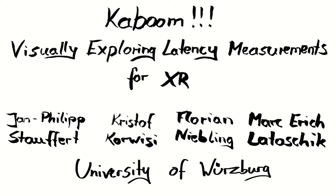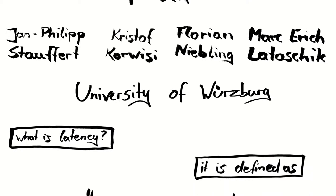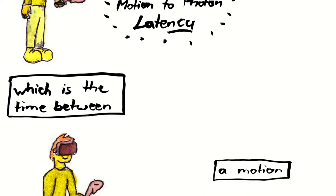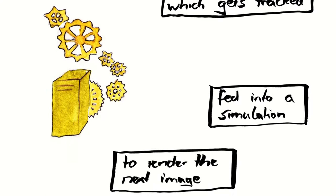So what is latency? It is defined as a delay in the system. In XR we most often look at the motion to photon latency, which is the time between a motion which gets tracked, fed into simulation to render the next image, which is then shown on screen.